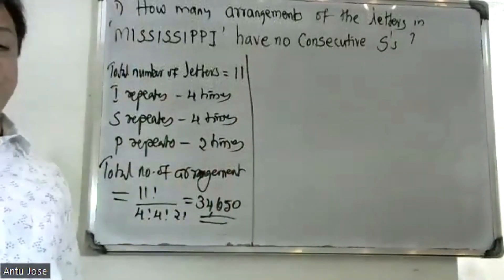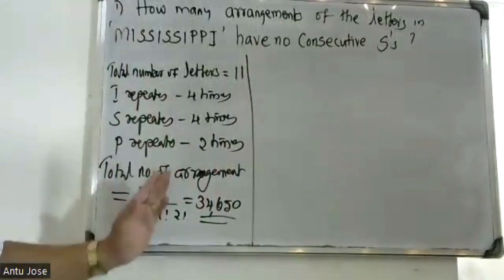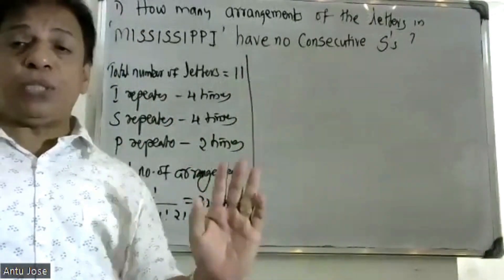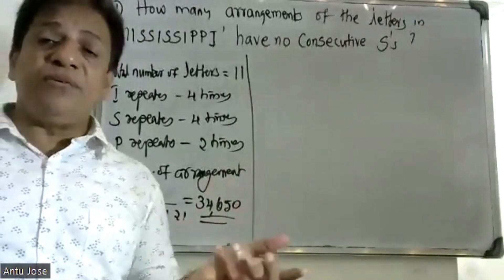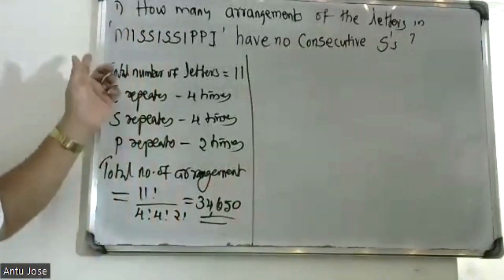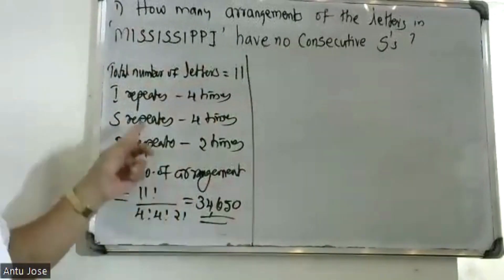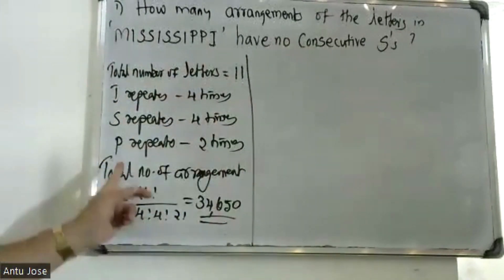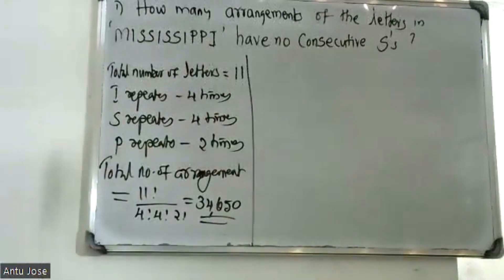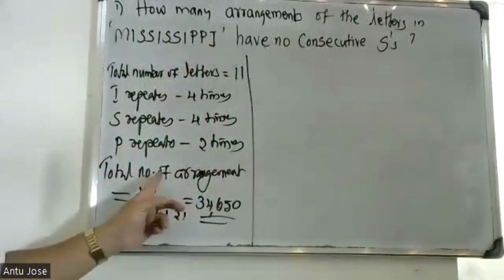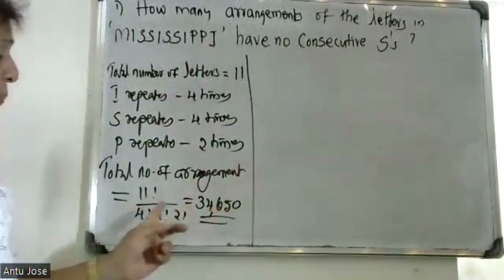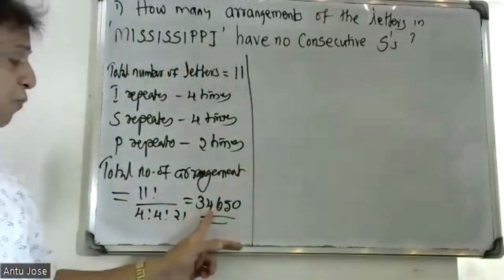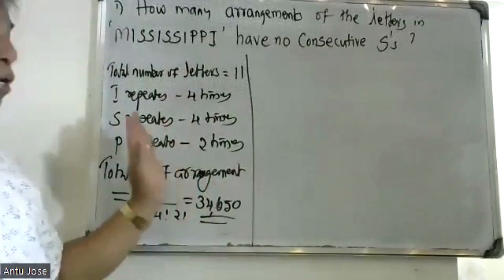We have to do the permutation formula: n factorial divided by p1 times p2... For Mississippi: I appears 4 times, S appears 4 times, giving 4 factorial times 4 factorial in the denominator.